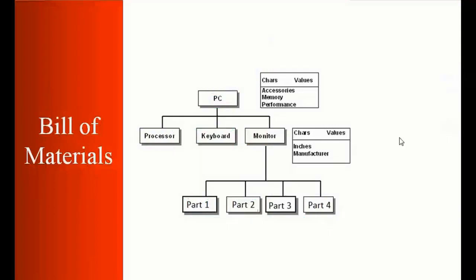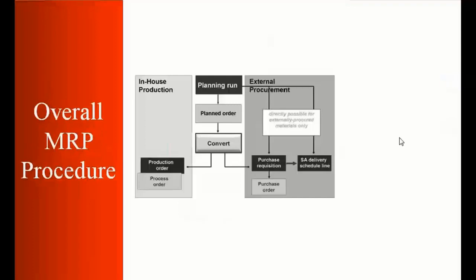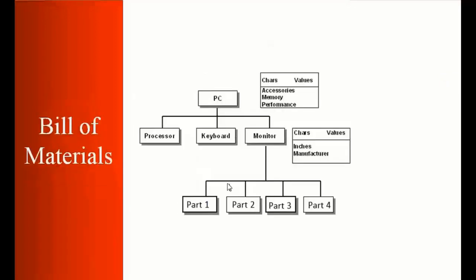Now we'll look at the overall MRP procedure. If you look at the material here, to make the PC, you need a keyboard and a monitor. So maybe the monitor is manufactured internally in the company, so I'll call it I - I stands for internal, internal manufacturing. And keyboard maybe is external procurement. That means the company is making the PC using different components, but some of the components they're buying from outside, from the vendor.